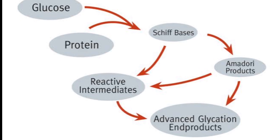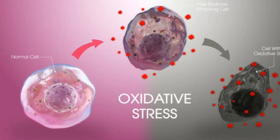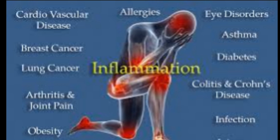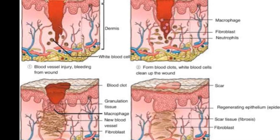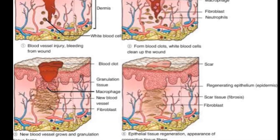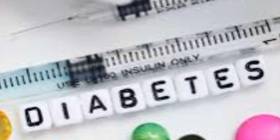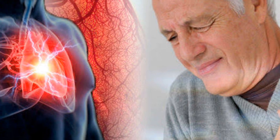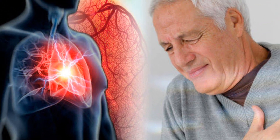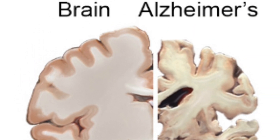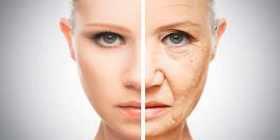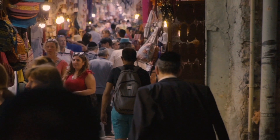These AGEs play a pivotal role in driving oxidative stress, inflammation, and tissue damage, contributing to the pathogenesis of chronic diseases such as diabetes, cardiovascular disease, Alzheimer's disease, and cancer, as well as the aging process itself.